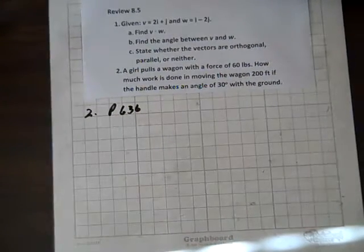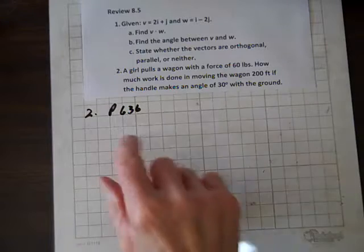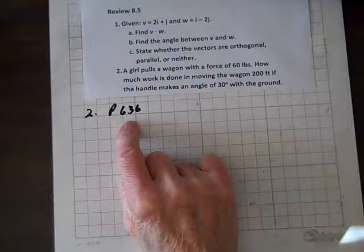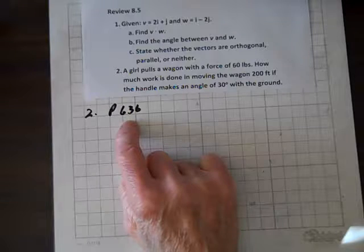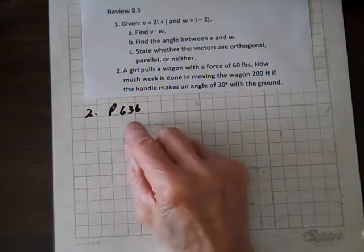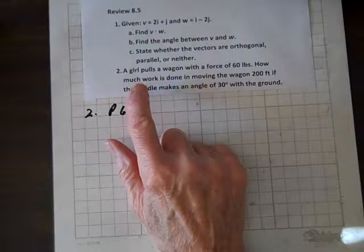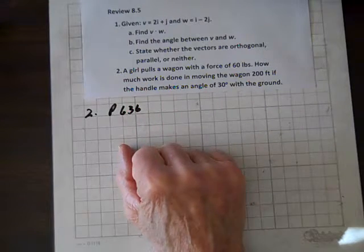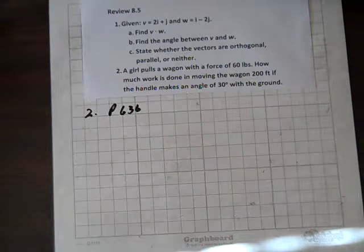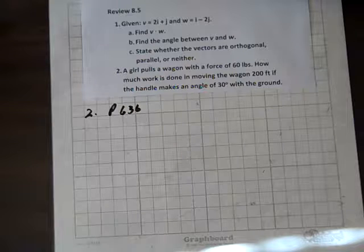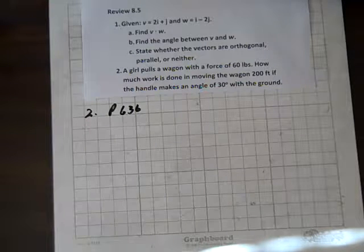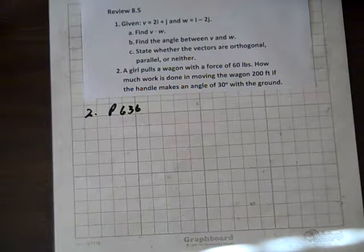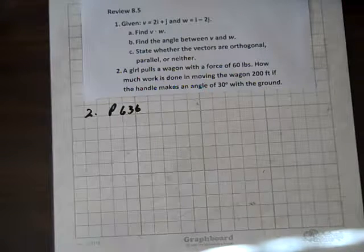Okay, now we're doing question two, and by the way, this question similar to this can be found on page 636. So, a girl pulls a wagon with a force of 60 pounds. How much work is done in moving the wagon 200 feet,